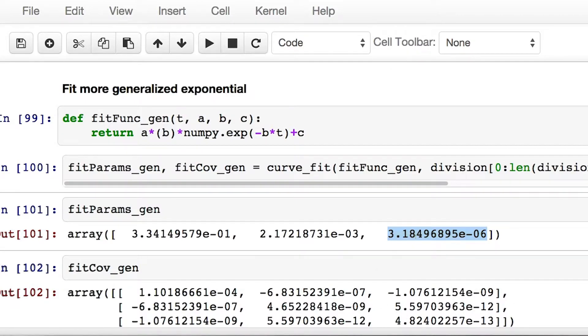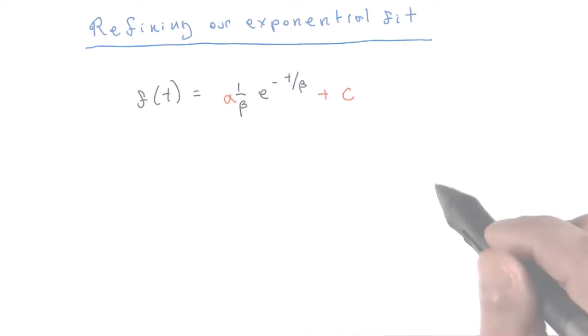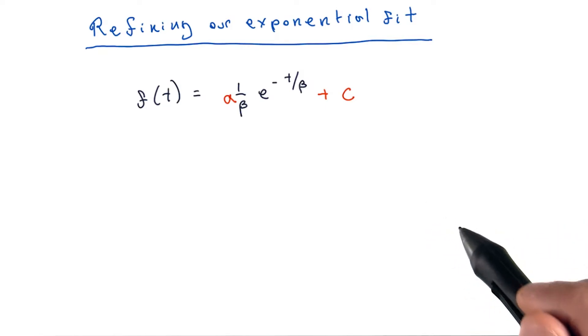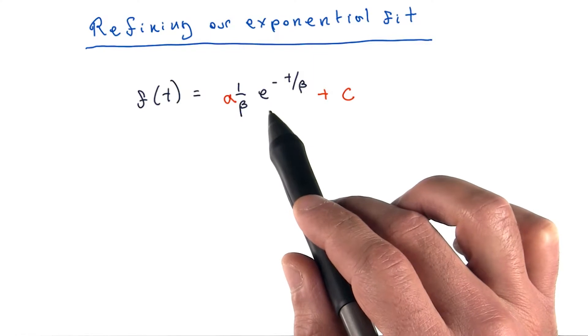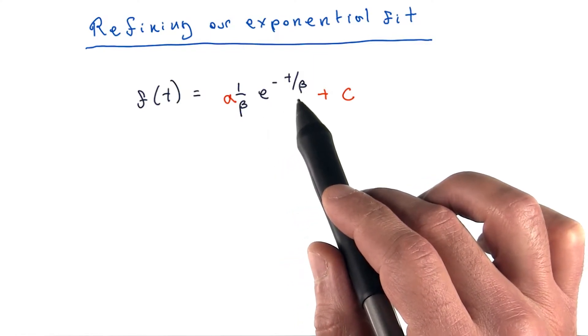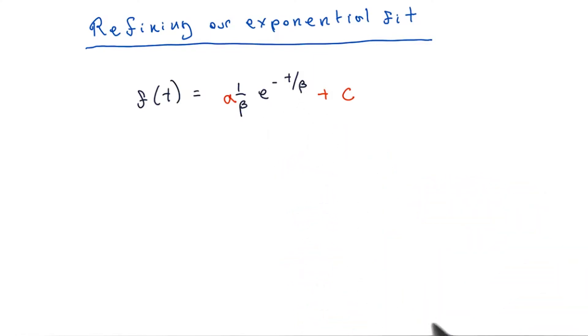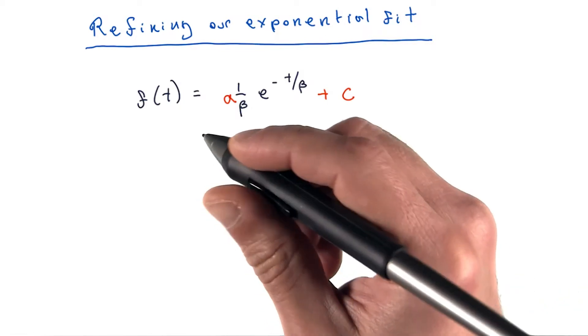Recall that the generalized form of the adjusted exponential model is a times 1 over beta times e to the power of minus t over beta plus offset c. Except that now, we have actual values for a, beta, and c. So let's just plug those in.